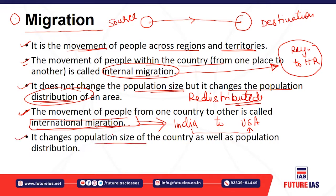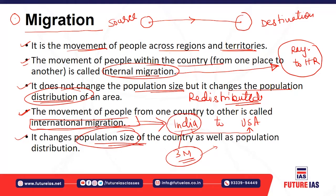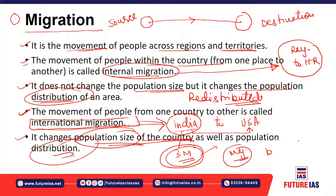International migration changes the population size. For example, if three million people left India and went to different countries — the USA, Canada, and others — India's population decreases by three million. The population size of the country decreases, and population distribution is also affected — for example, if the majority of migrants came from Punjab, Punjab's population would be significantly impacted. In the destination region, population increases.